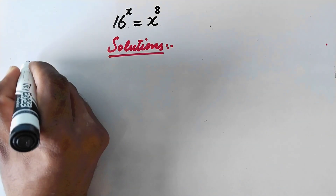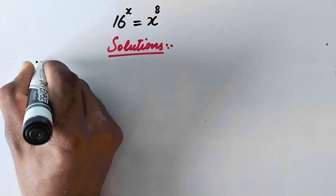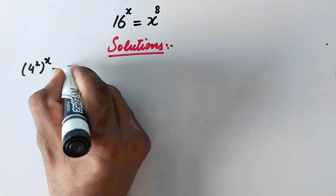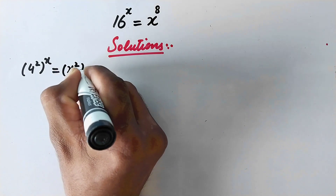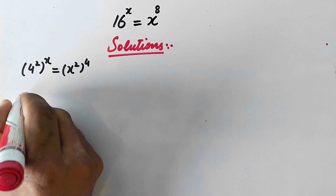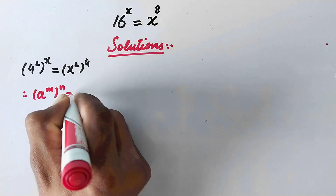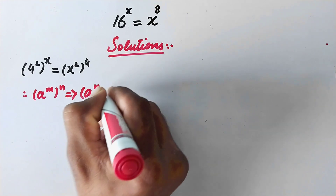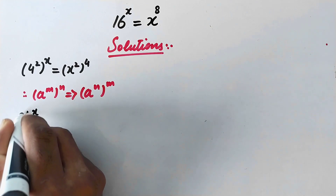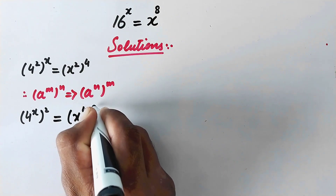In the first solution, we can write 16 as 4 squared, so 4 squared to power x is equal to x raised to power 8, which is the same as x squared to power 4. In the next step, we can exchange these powers, as we know that a raised to power m to power n can also be written as a raised to power n to power m. So the above values can be written as 4 to power x to power 2 is equal to x to power 4 to power 2.